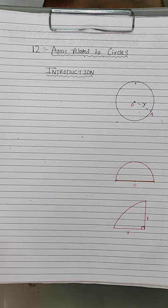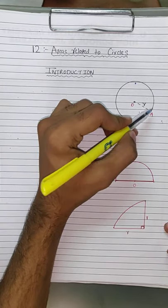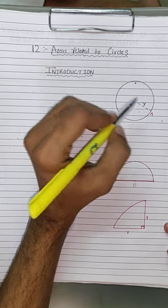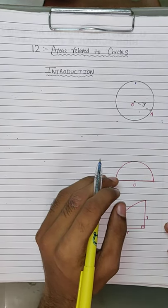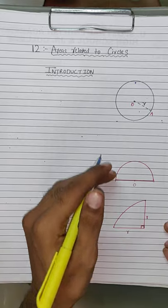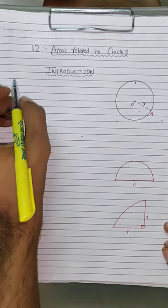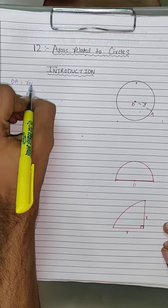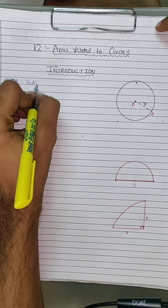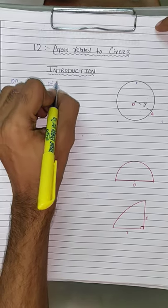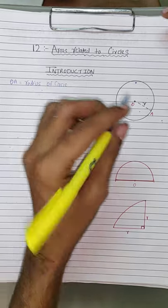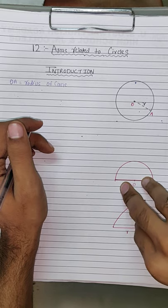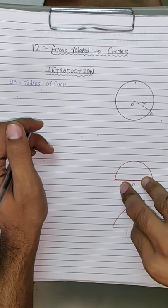So as we know, this is a circle. A circle is made by the radius r. The center is generally O, and OE is nothing but the radius of the circle.